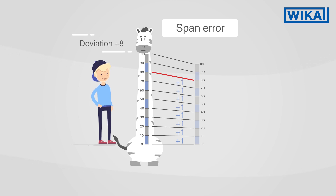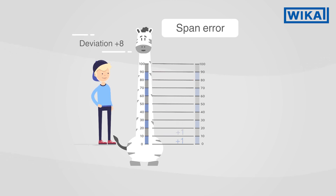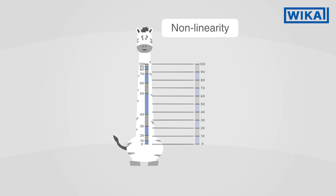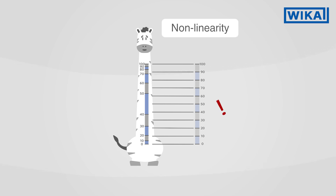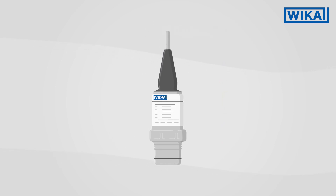Non-linearity describes how crooked or nonlinear the measured characteristic curve is. On the chart, the intervals are sometimes too short, sometimes too long, or just right. The deviations are therefore uneven or nonlinear, which makes the measuring result sometimes too high and sometimes too low.